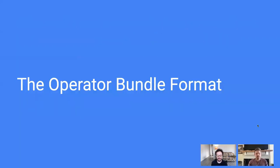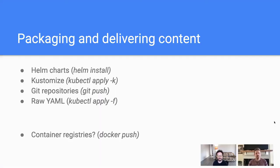Thanks, Alex. So I'd like to discuss today the operator bundle format and some different ideas around packaging and delivering Kubernetes manifests and Kubernetes data onto the cluster. To begin with, let's look a little bit about how we package and deliver content in the Kubernetes space today. Generally, we have solutions that evolve around Helm charts, Kustomize or GitOps, Git repositories, or simply raw YAML. These are all the different ways that people commonly take Kubernetes manifests, template them, and push them to a cluster.